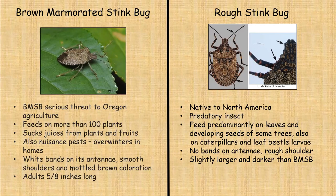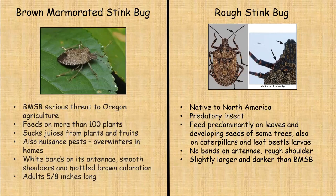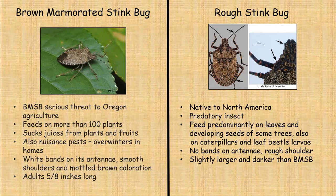It looks very similar to our native rough stink bug. If you saw both side by side it would be easy to tell the difference, but if you only saw one you might wonder which it is. Our rough stink bug is native to North America and is a predatory insect — it feeds on caterpillar and leaf beetle larvae, which is a very good thing. The key difference: the brown marmorated has white bands on its antennae, while the rough stink bug has none. The brown marmorated has smooth shoulders, while the rough stink bug has very rough shoulders — that's how it got its name. The rough stink bug is slightly larger and darker than the brown marmorated.